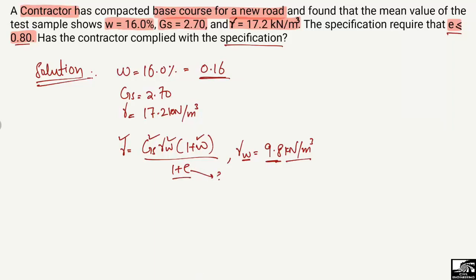We rearrange the formula to solve for e. Shifting the terms, we get: 1 + e = (Gs × gamma_w × (1 + w)) / gamma. Now we can substitute our known values into this equation.